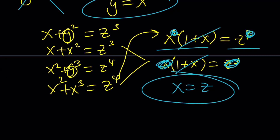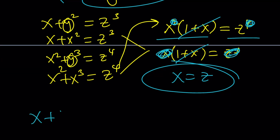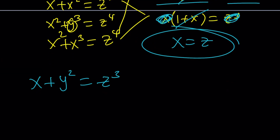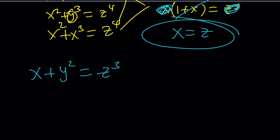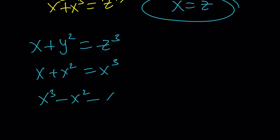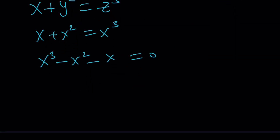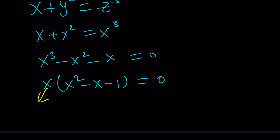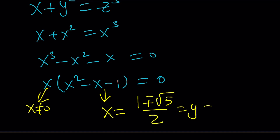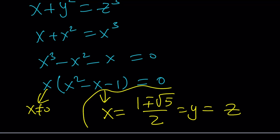Now we substitute x equals y equals z into the first equation to get x plus x squared equals x cubed. Putting everything on one side and factoring: x times (x squared minus x minus 1) equals zero. Since x is not zero, we solve the quadratic x squared minus x minus 1 equals zero, which gives x equals (1 plus or minus the square root of 5) divided by 2 — the golden ratio. This is also the y and z value, giving us the final solutions for this most interesting case.